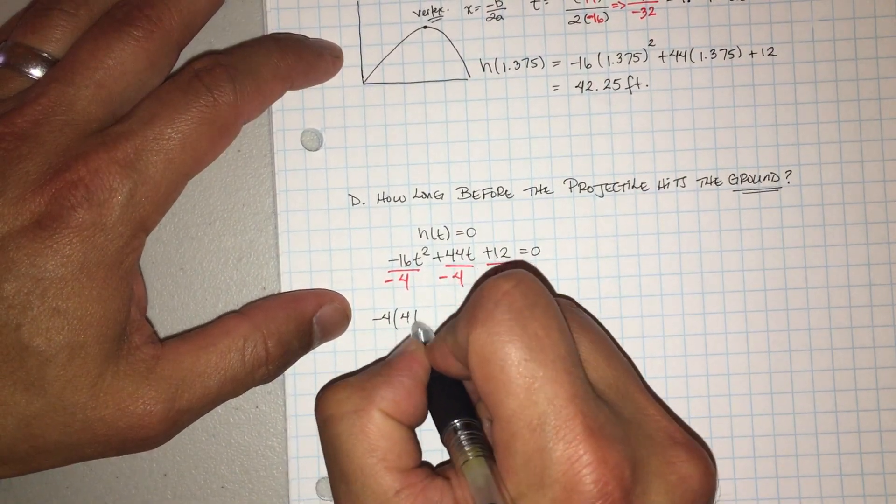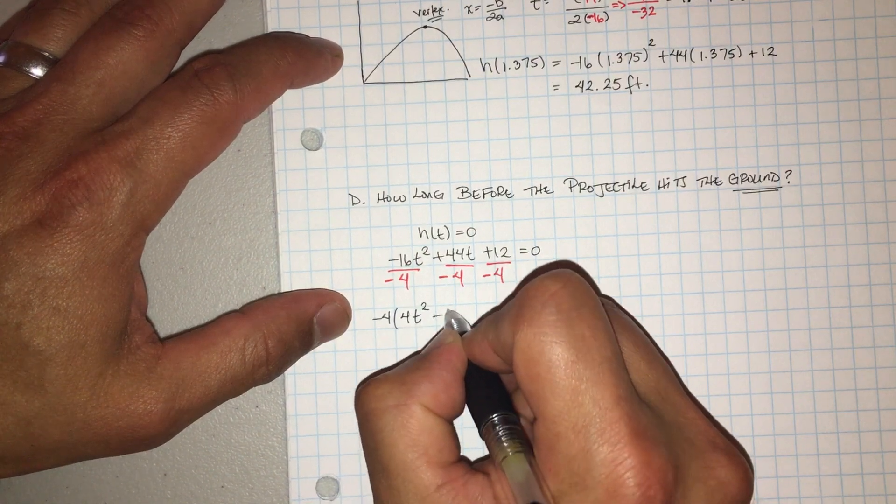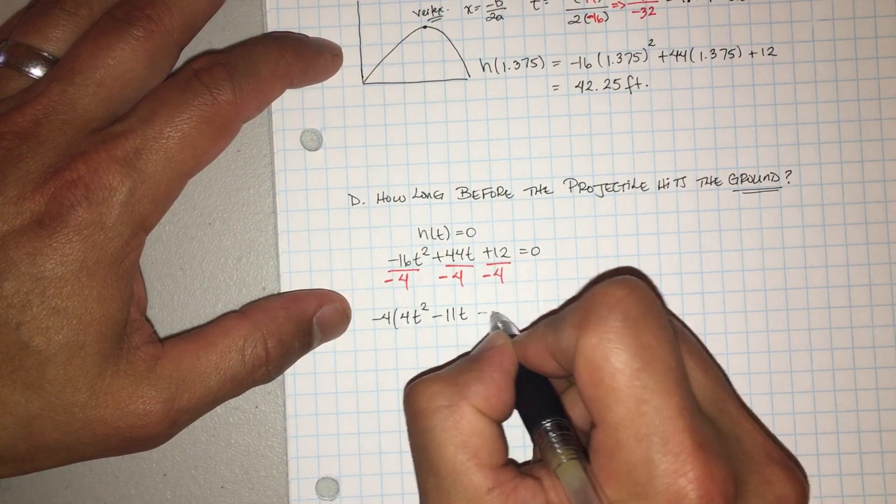Okay, you're going to get four t squared minus 11t, and then that gives you minus three.